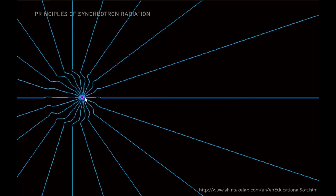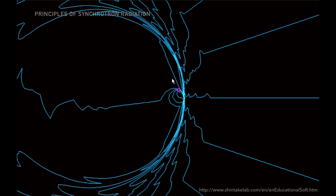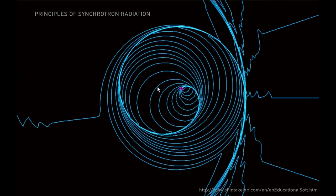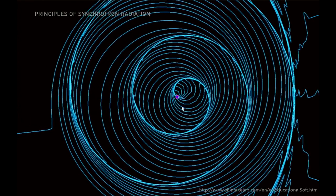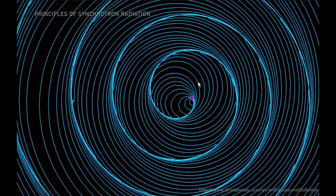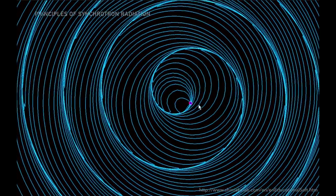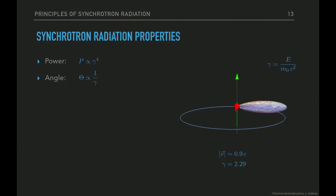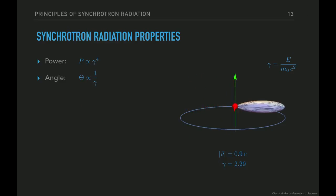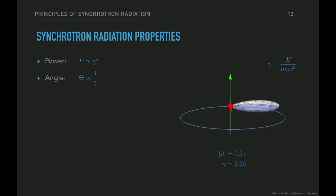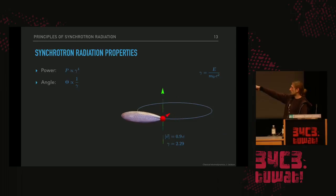Ich habe hier eine Simulation gemacht – man kann das unter diesem Link herunterladen. Das ist eine Punktladung, ich ziehe sie mit meiner Maus herum, um die Geschwindigkeit zu erhöhen, und wenn ich diese Geschwindigkeit erhöhe, werden die Feldlinien in diesen Konus zusammengedrückt. Man sieht wirklich diese Strahlung sehr gut, wenn man das Teilchen im Kreis bewegt. Der größte Teil der Strahlung ist in Vorwärtsrichtung des Elektrons. Der Öffnungswinkel skaliert mit 1/γ und die Energie skaliert mit γ⁴.